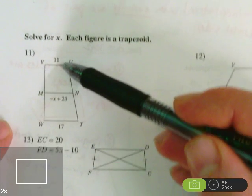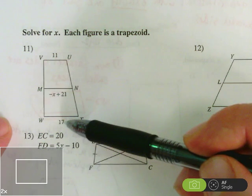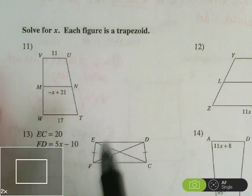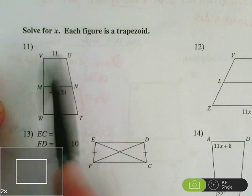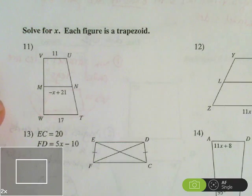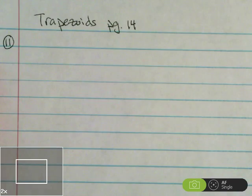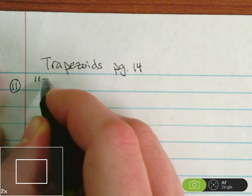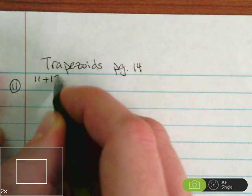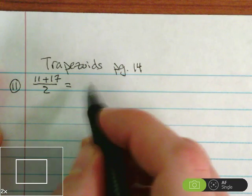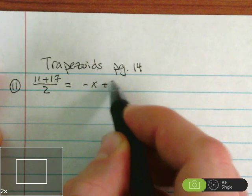Alright, so number 11. We've got that the top base of the trapezoid is 11, the bottom base of the trapezoid is 17, and the median is negative x plus 21. Remember the length of the median is the average of the two bases. So 11 plus 17, then divided by 2 is equal to negative x plus 21.